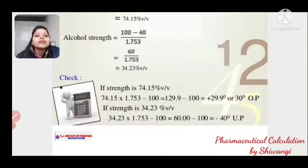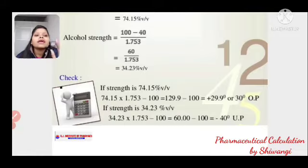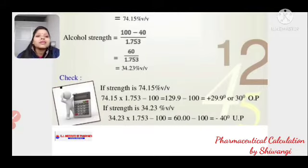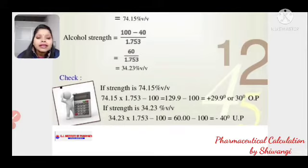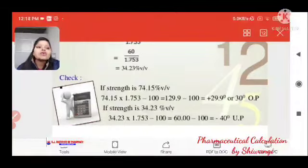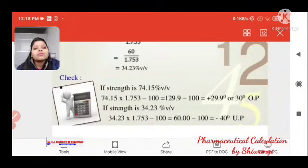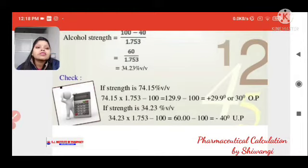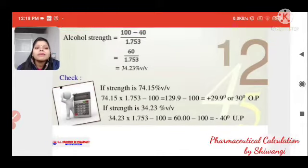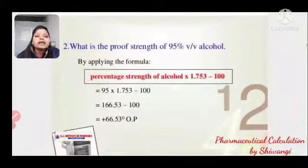If the strength is 74.15%, we verify: 74.15 × 1.753 − 100 gives approximately +29 to +30, confirming it is over proof. If the result is negative, it confirms under proof.